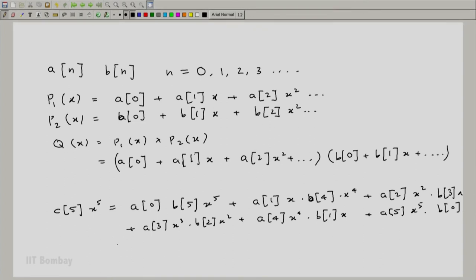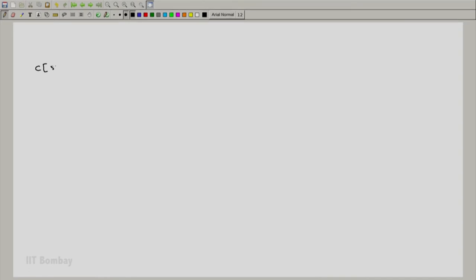Let us call the coefficient c[5] times x raised to 5, and that is going to look like this: a[0] times b[5] into x raised to 5 plus a[1] times x times b[4] times x raised to 4 plus a[2]x squared times b[3]x cubed plus a[3]x cubed times... these are the only ways in which you can end up with x raised to 5. These can be represented by this summation.